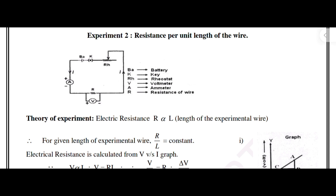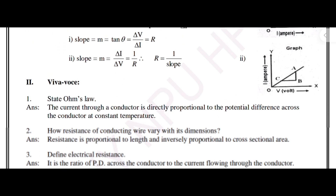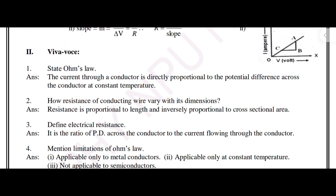Next, I will move to the experiment on resistance per unit length of the wire. The first and second experiments share the same circuit diagram with no changes. One experiment has a graph with calculations, and the other experiment has only a graph. The VIVA questions are the same for both.